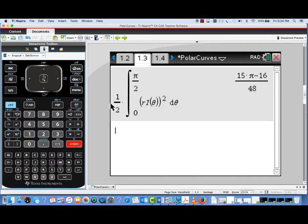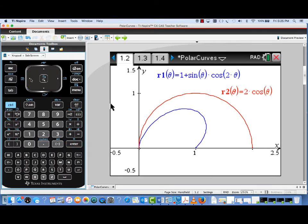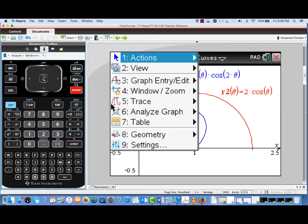Now because this is a computer algebra system machine, or a CAS machine, notice that it's expressed in an exact form. This 15 pi minus 16 all over 48. If we want to see that in decimal form, we'll just pull up the answer and do the control shift of enter to get the decimal approximation. And that's what would have been expected, presented as an answer on the exam.